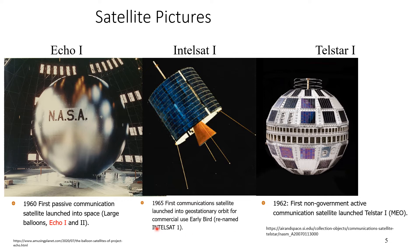Here are some pictures: Echo 1 looks like a big balloon — you can see people standing next to it. This is how Intelsat 1 looks. And in 1962, the first non-government active communication satellite was launched by Telstar — Telstar 1.